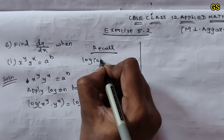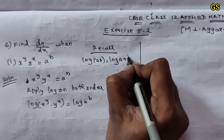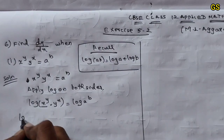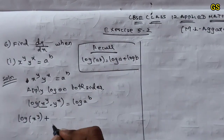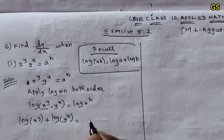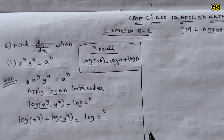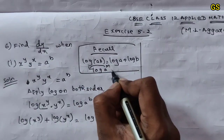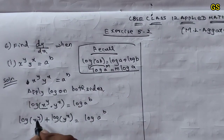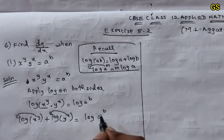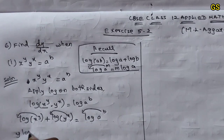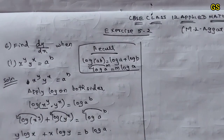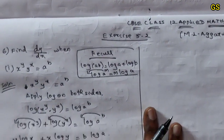Log property: log of a into b equals log a plus log b. Log of a power m: the power comes to the front. So we get y log x plus x log y equal to b log a. Now differentiate dy/dx.